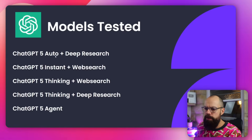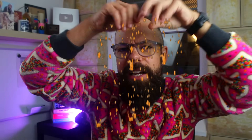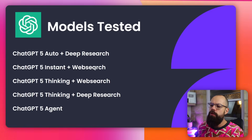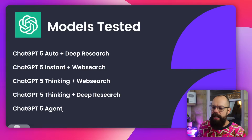Here are the models I've tested: ChatGPT 5 Auto, Instant, Thinking, and Agent. I also added some variations: deep research and web search, because we want to go out to the web and search databases for academic papers. Deep research results in a particularly interesting outcome — and the Agent result will shock you, so stay around to the end.